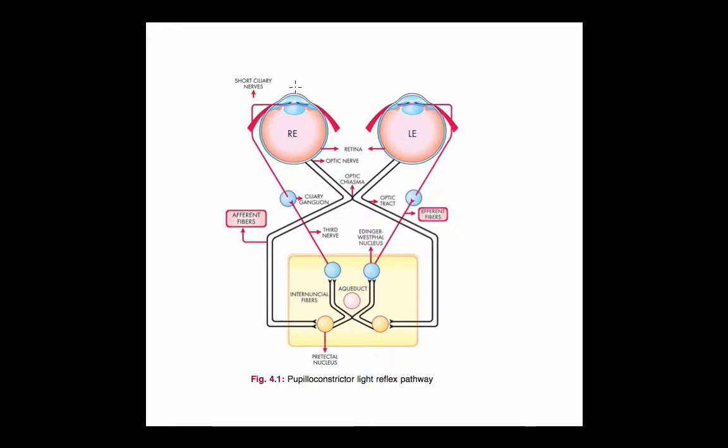Light is received by the retina, and signals from the retina go through the optic nerve, cross at the chiasm, and go to the optic tract. Here at the optic tract, pupillary fibers come off and actually innervate the pre-tectile nucleus.